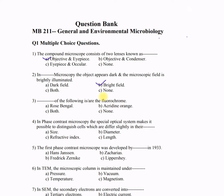In dark field microscopy, the field is dark and the object appears brightly lit. Question 3: Which of the following is/are fluorochromes? A) Rose Bengal, B) Acridine orange, C) both, D) none. Both rose bengal and acridine orange are fluorochromes, so the correct option is C. Although the quantum yield of the fluorochrome is much smaller in the case of rose bengal.